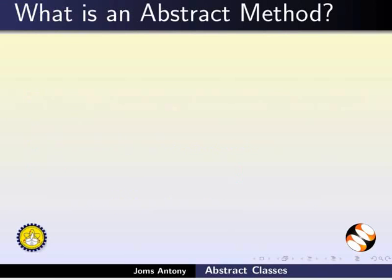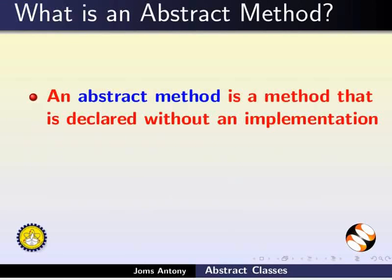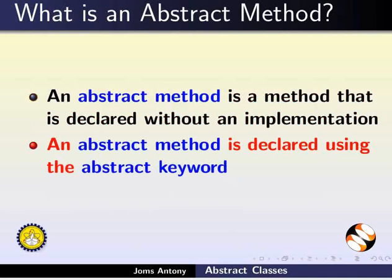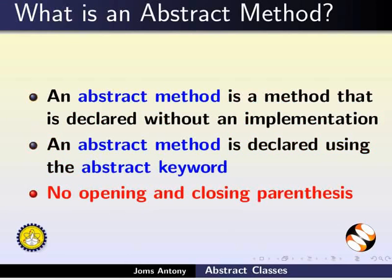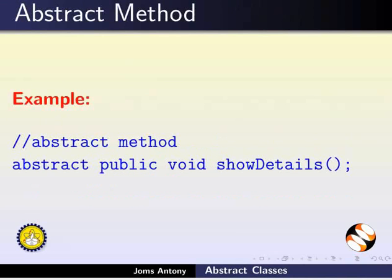First, we will see about Abstract Method. An Abstract Method is a method that is declared without implementation. It is declared using the Abstract Keyword. There should not be opening and closing curly braces for this method. The method showDetails illustrated here is an example of an Abstract Method, declared using the Abstract Keyword with no current implementation.